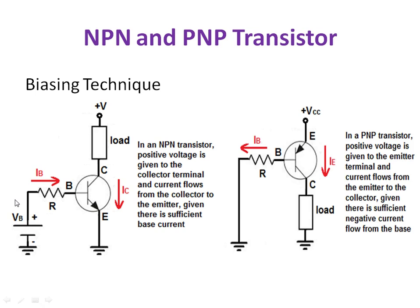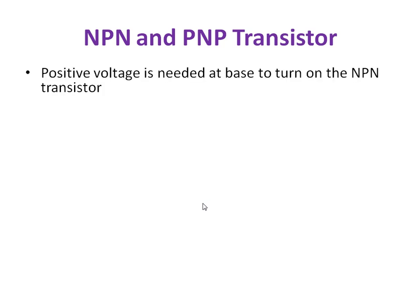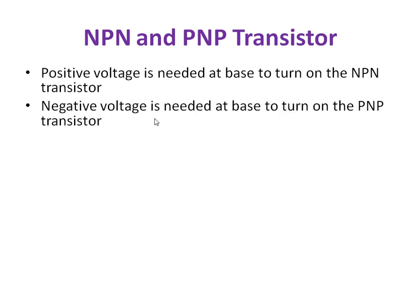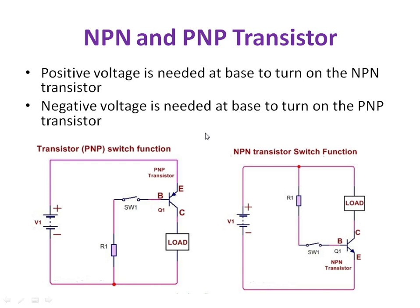One more difference is the base current. For NPN, we apply a positive base current — positive voltage is required at the base to turn on the NPN transistor. For PNP, we apply a negative base current — negative voltage is needed at the base to turn on the PNP transistor.